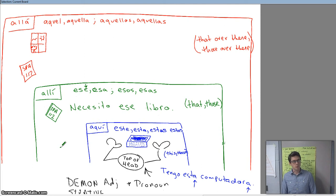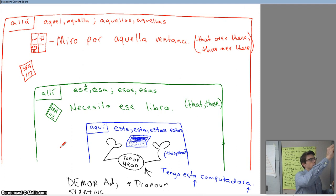Now, let's say you're looking through that window way over there. Miro por aquella ventana. I'm looking through that window way over there. That's what we're indicating. So aquella means that it's not close. It's really not close at all. It's that window way over there.